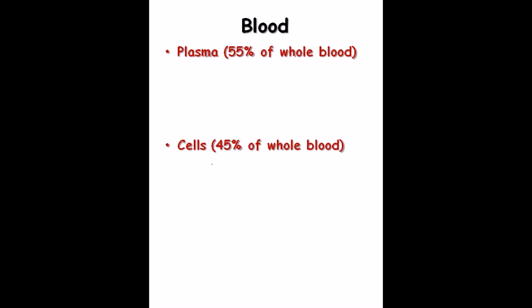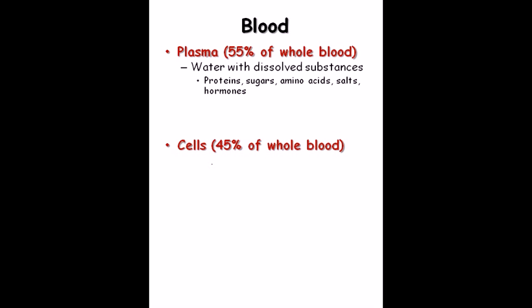The vehicle for transferring gases and nutrients is blood. Two types of things are transferred: gases like oxygen and carbon dioxide, and nutrients like carbohydrates, fats, and lipids. Blood is made up of two parts: plasma, which makes up about 55 percent, and the cellular part, which makes up about 45 percent. About 90 percent of plasma is water. Plasma consists of water with dissolved substances like proteins, sugars, amino acids, salts, and hormones. Variations in plasma concentration can indicate metabolic imbalances or kidney problems.